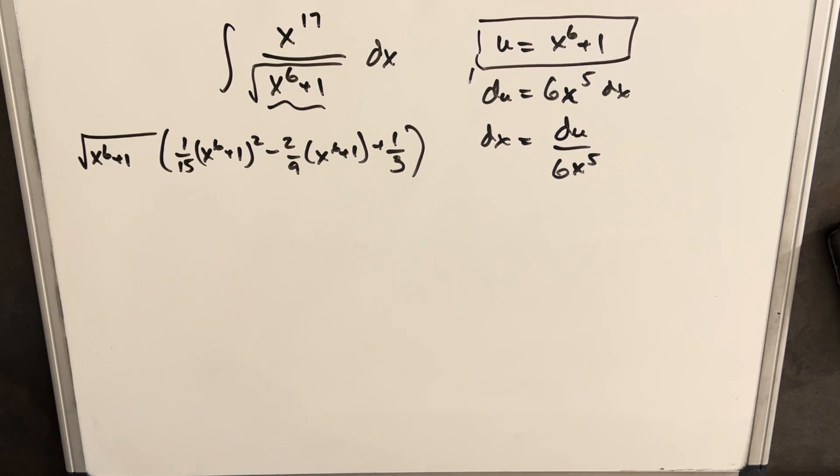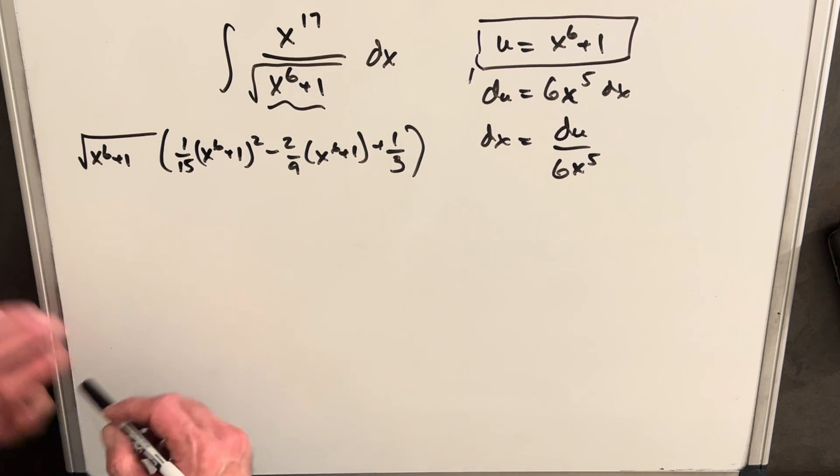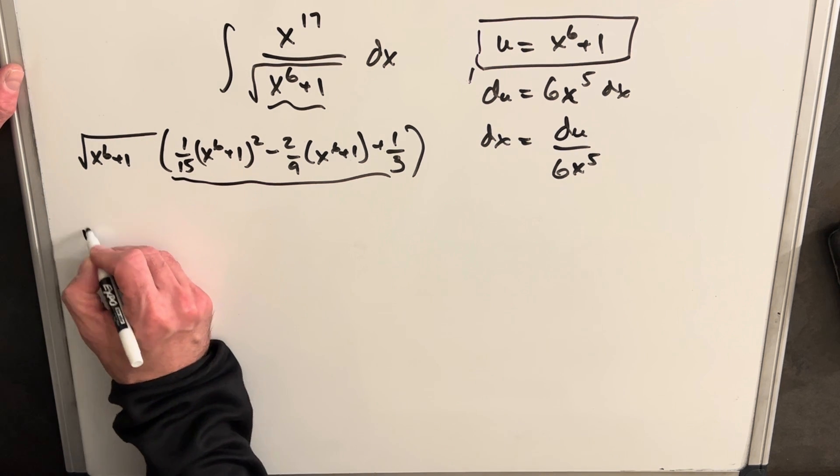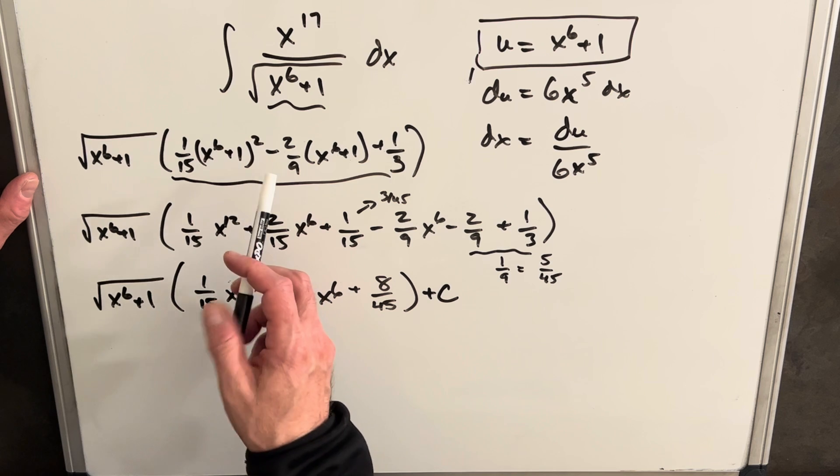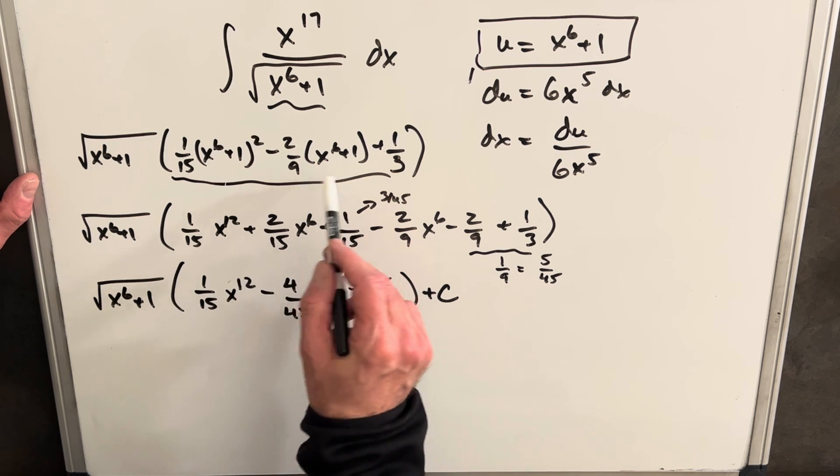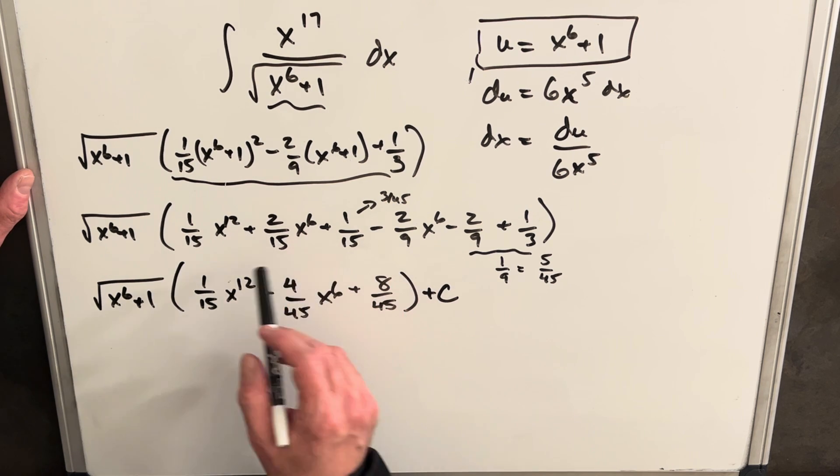We can actually just leave our answer in this form, but I think I'd like to clean it up a little bit just by combining some like terms. So let's clean up this bit right here, and we'll do it real quick. Okay, so what I've done is I just, I squared this first term out, and then I distributed the 2 9ths in here.